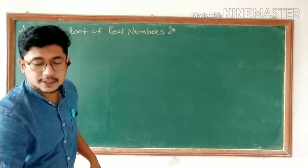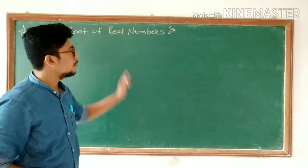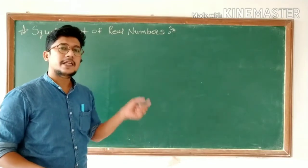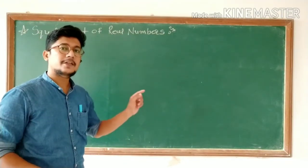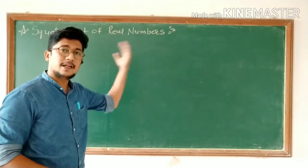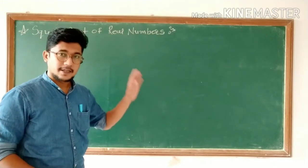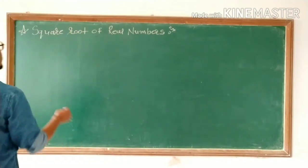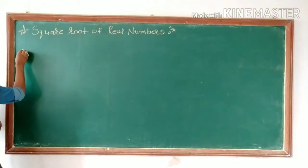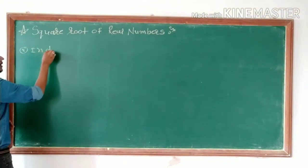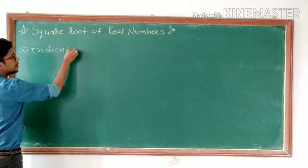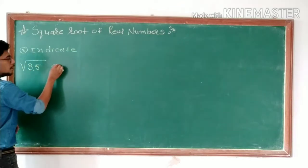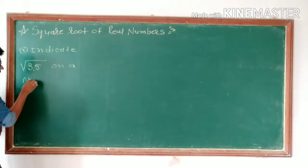Today we will learn about square root of real numbers. If square root of positive integers was easy for you, then this will be even easier. This method is comparatively easy when comparing it with positive integers. The root spiral method was harder — the real number method is much easier. So the first problem we are taking: indicate square root of 3.5 on a number line.